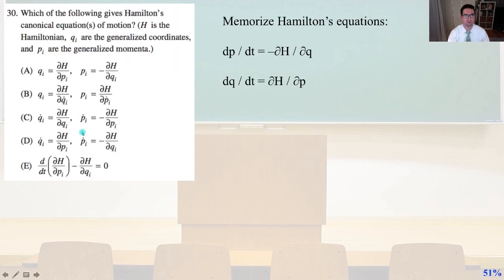Number 30. Which of the following gives Hamilton's canonical equations of motion? H is the Hamiltonian, QI are the generalized coordinates, and PI are the generalized momenta. We're just going to have to memorize Hamilton's equations. These are so fundamental. DP divided by DT, that is P dot, and DQ divided by DT, that is Q dot. P dot equals negative the partial derivative of H divided by the partial derivative of Q. And then, Q dot equals the partial derivative of H divided by the partial derivative of P. And that is answer D.